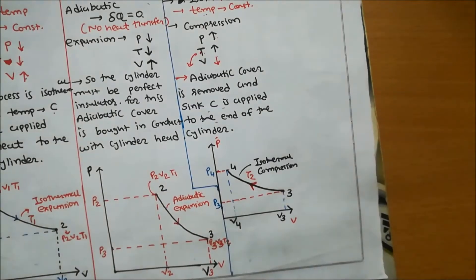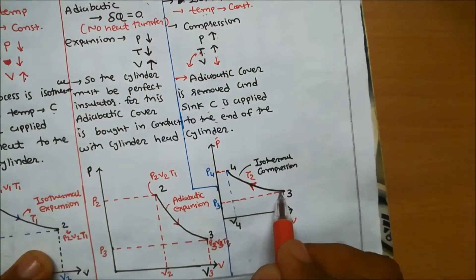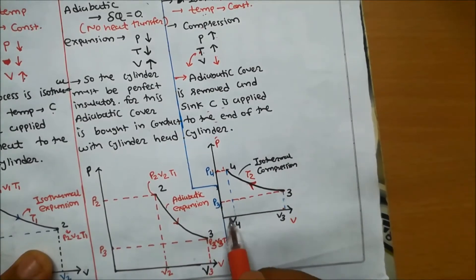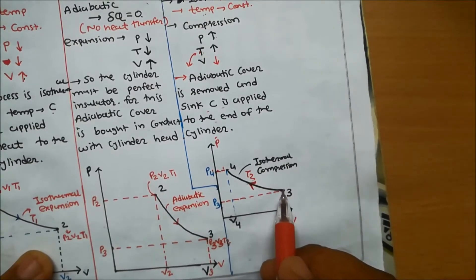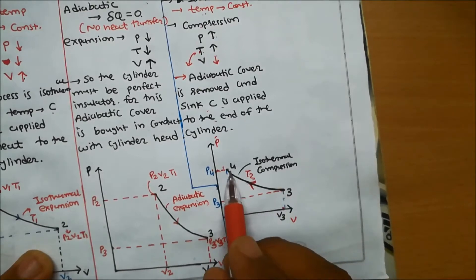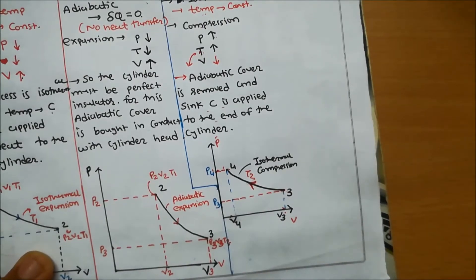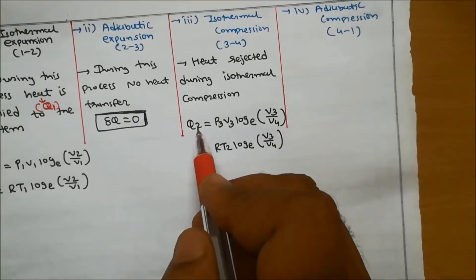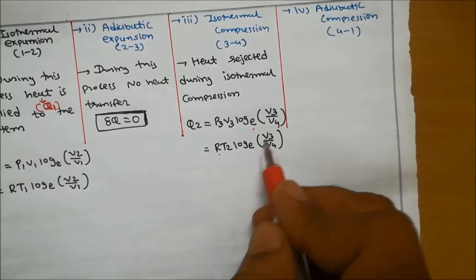On the PV diagram, the isothermal compression process goes from point 3 to point 4. Pressure increases from P3 to P4, volume decreases from V3 to V4, and temperature remains constant. Heat is rejected during this process. The heat rejected equation is Q2 = P3V3 ln(V3/V4), or equivalently RT2 ln(V3/V4).